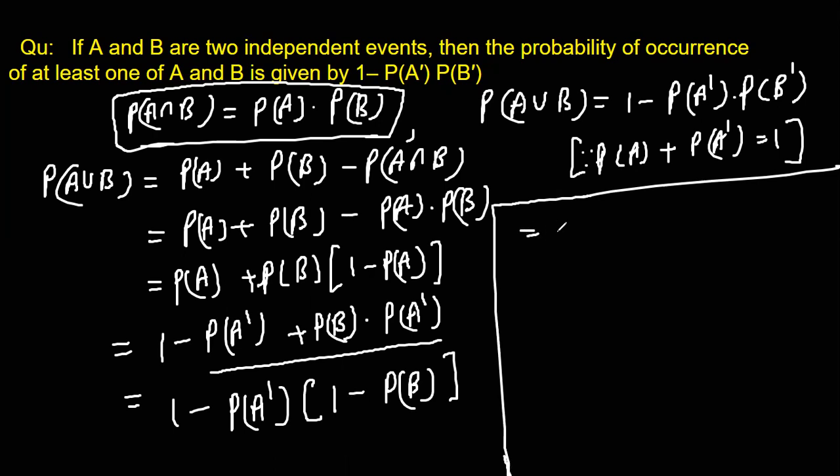Write it here, which comes out to be 1 minus P(A') into P(B'). That's what we are asked to prove. P(A∪B) which comes out to be 1 minus P(A') into P(B').